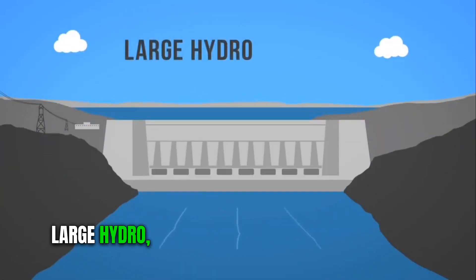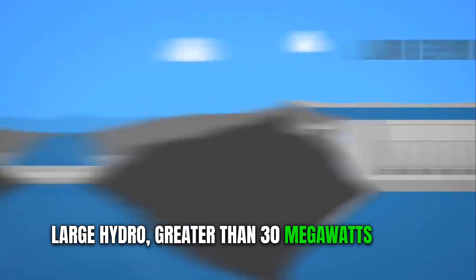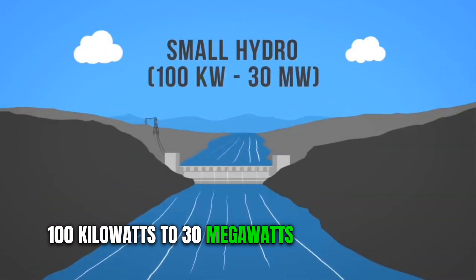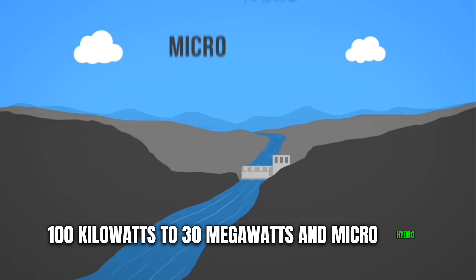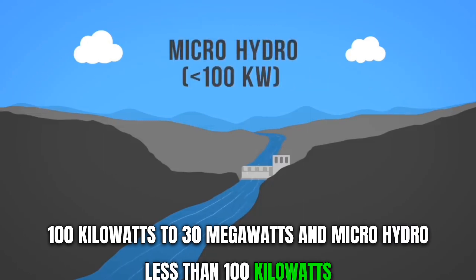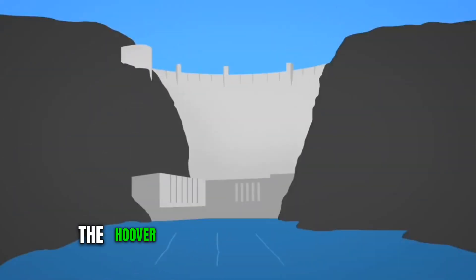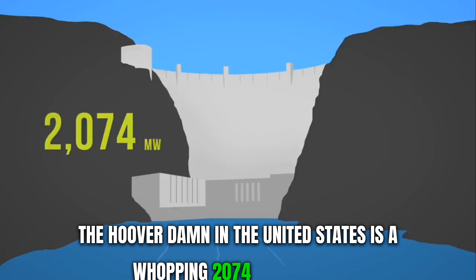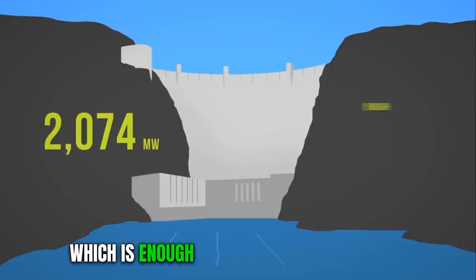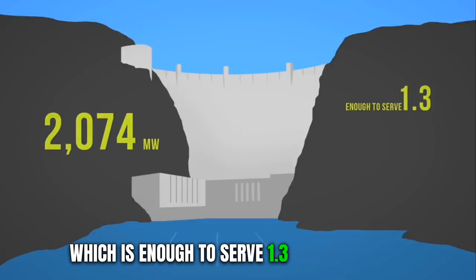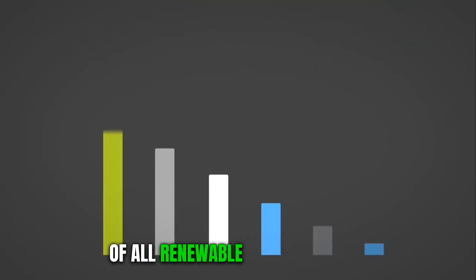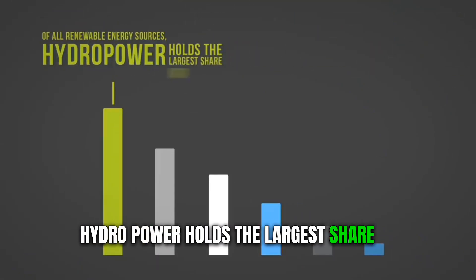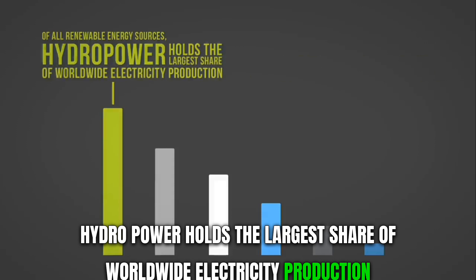There are various sizes of hydro plants that produce electricity: large hydro, greater than 30 megawatts; small hydro, 100 kilowatts to 30 megawatts; and micro hydro, less than 100 kilowatts. The Hoover Dam in the United States is a whopping 2,074 megawatts, which is enough to serve 1.3 million people. Of all renewable energy sources, hydropower holds the largest share of worldwide electricity production.